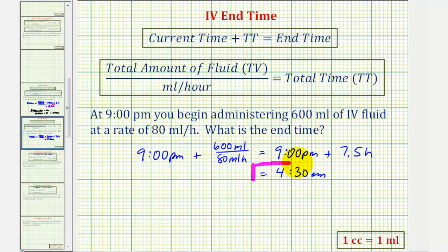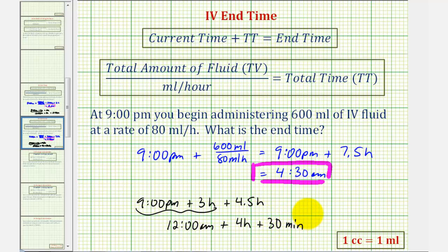Again, to make sure that we understand this correctly, if we start at 9 p.m. and then instead of writing plus 7.5 hours, we'll write that as plus 3 hours plus 4.5 hours, where 9 p.m. plus 3 hours would be 12 midnight or 12 a.m. plus 4.5 hours, which would be the same as 4 hours plus 30 minutes, giving us an end time of 4:30 a.m. I hope this explanation helps.